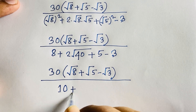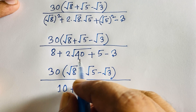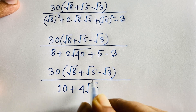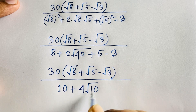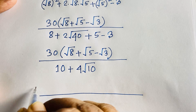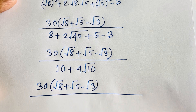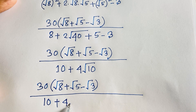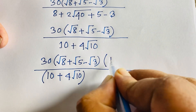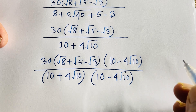Now √40 equals √(4×10), and √4 is 2, so 2 times √40 equals 4√10. So the denominator simplifies to 10 plus 4√10. The expression becomes 30 times (√8 + √5 − √3) over 10 plus 4√10.